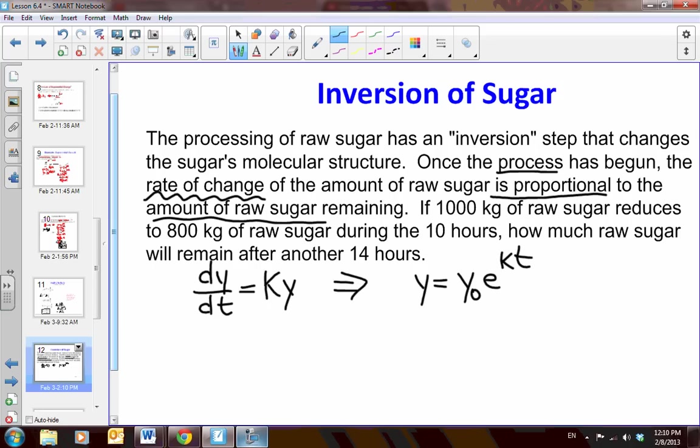Now, all I need to do is plug in the facts. So, the facts are, if 1,000 kilograms of raw sugar reduces to 800. So, I have 800 equals 1,000, E to the kt, and I'm also told that this occurs during 10 hours. So, I have 800 equals 1,000 times E, and then that would be 10k.